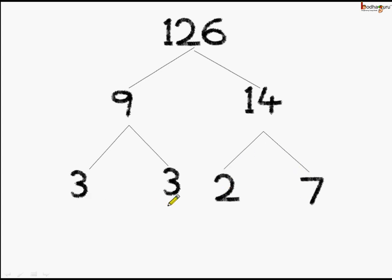Now, let's check all the branches at the bottom. 3 — it doesn't need further branches as it is a prime number. Coming to this 3 again, it doesn't need any more branches because it is a prime number. 2 is again a prime number, and 7 is again a prime number. So, we see our factor tree is complete, and through this we have done prime factorization of 126.